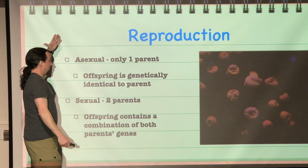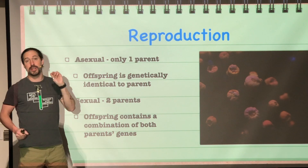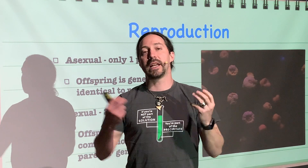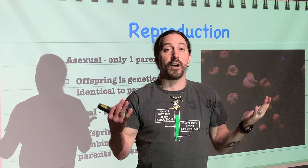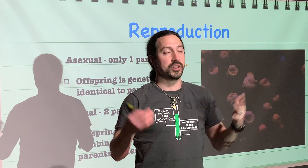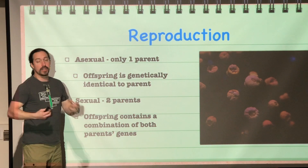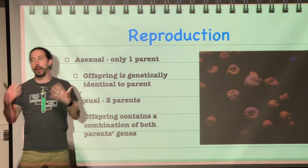Asexual reproduction means that you only have one parent, and that means that your offspring is also going to be genetically identical to that single parent. Since it is only one parent donating the genes, the offspring only gets those genes. For sexual reproduction, you have two parents, and the offspring is going to have a combination of genes from each parent.